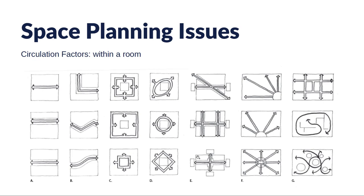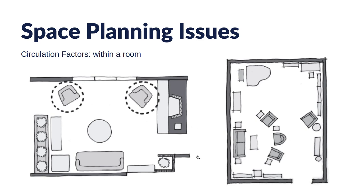Thinking about corridors, hallways, and paths through a space — even just within a room — these can have many variations: whether it's straight through, turning, curving, zigzagging, or whether there are many paths through a room. This is all going to depend on the size, orientation of furniture, and openings within the room. If there's one doorway, it's going to have a very different traffic pattern than if there are multiple.